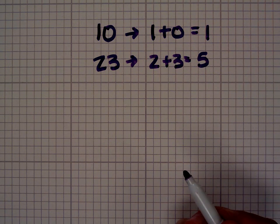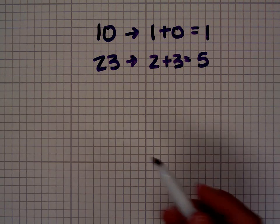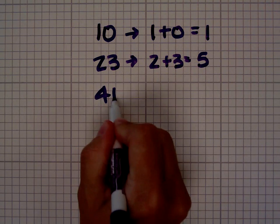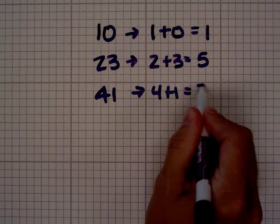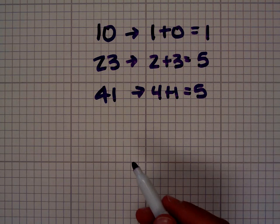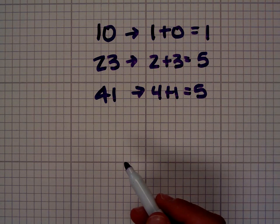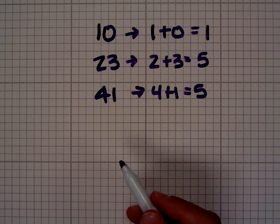Again, digital roots are between 1 and 9. Let's look at the number 41. 4 plus 1 is 5, so 23 and 41 have the same digital root. That means they have some other things in common which we'll investigate in later marker board videos.